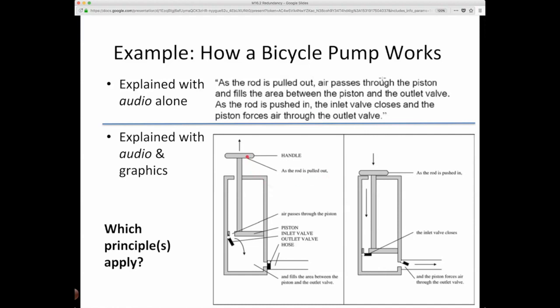Well, you can do what I'm doing with this pointer. So the audio... This is off, there's no onscreen text, but the audio would be saying, As the rod is pulled out, air passes through the piston and fills the area between the piston and the outlet valve. As the rod is pushed in... Sorry, I shouldn't be pointing there. That's not there. Redundancy says don't have it there. As the rod is pushed in, the inlet valve closes. Here it's open, here it's closed. And the piston forces the air through the outlet valve.